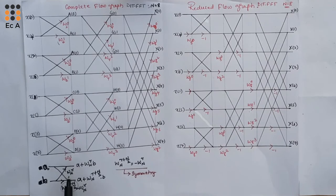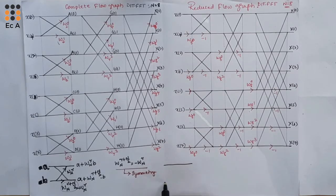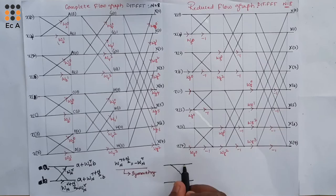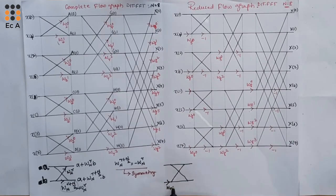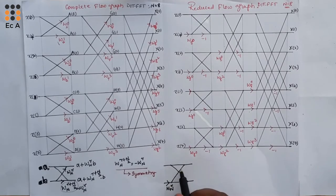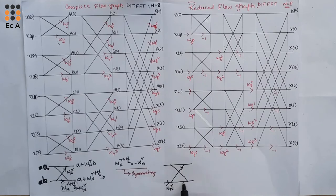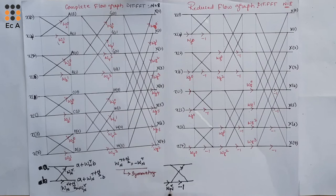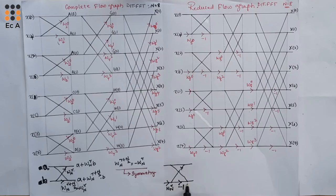So using this symmetry property, the second output becomes a minus W_N^r times b. Instead of writing two twiddle factors, we can write a single twiddle factor. We take a single twiddle factor W_N^r on one line, and on the other line it is multiplied by minus 1, giving minus W_N^r. This is the butterfly structure simplification.